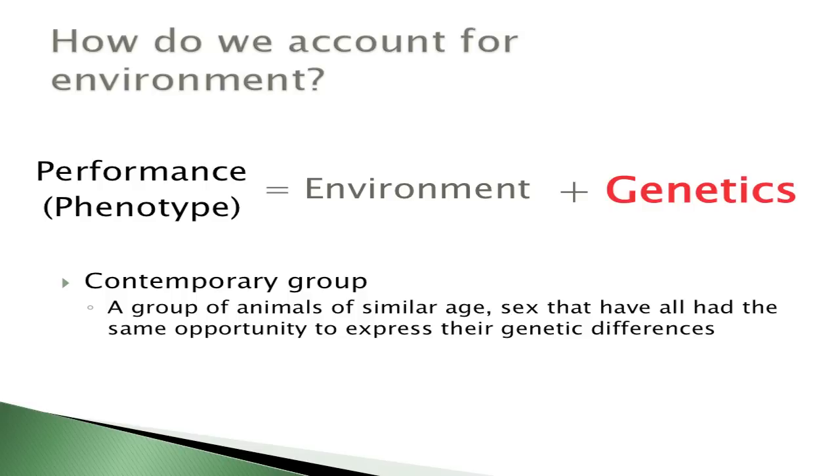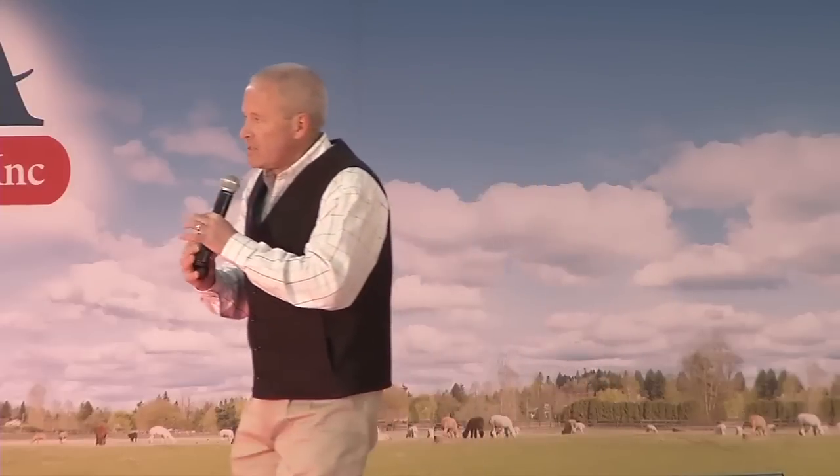One of the key concepts for EPD is contemporary group. To get good EPDs, we need to know who competed head to head in the same environment, in the same year, treated the same. We devise a contemporary group by combining farm with birth year. We're only comparing animals that have had the same opportunity to express genetic differences. This is key to any evaluation because we don't know what the effect of an extra inch of rain on pasture growth is on fiber diameter — but we know all animals on your farm had that same experience.